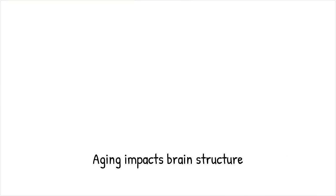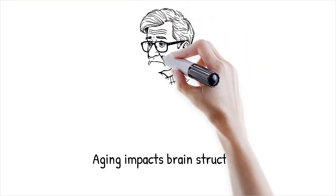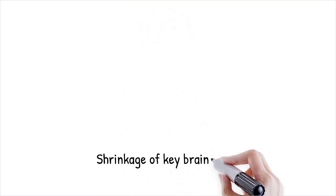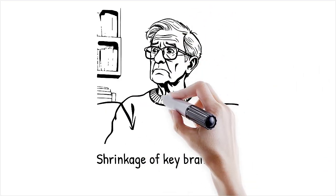As people age, the brain undergoes structural changes, including neuron loss, reduced neurotransmitter production, and slower synaptic firing. The prefrontal cortex and hippocampus responsible for memory and reasoning shrink over time.